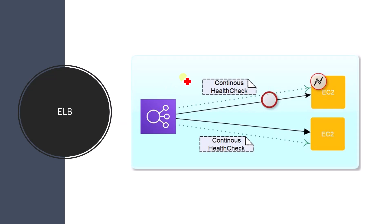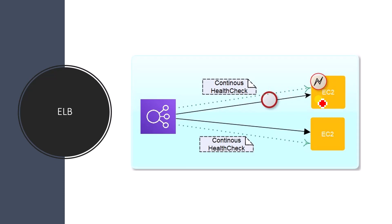Now, the limitation and functionality of ELB: when ELB is sending traffic to an EC2 instance, it is also continuously doing health checks. If a health check fails, it will stop sending requests to that EC2 instance, but it cannot reboot, restart, or spin up a new EC2 instance. So ELB has the limitation that it can do health checks but cannot restart or create new EC2 instances — for that we need auto scaling.